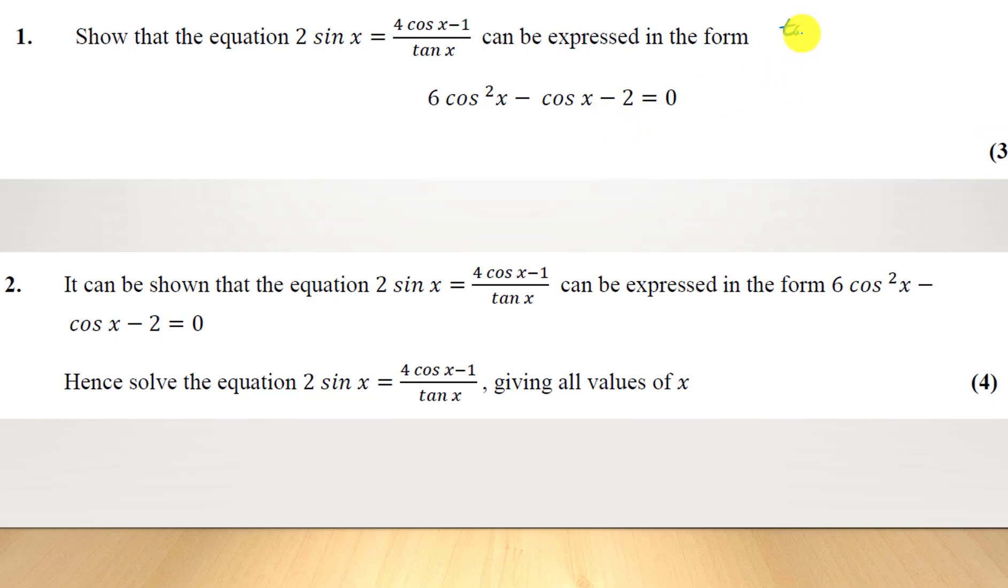We start with, we know tan(x) equals sin(x) over cos(x). So I'm going to times the tan out, so I don't have to deal with it as a fraction over a fraction. I'm going to show you this here, write it like this, equals 4cos(x) minus 1. Now we can see something happening. This is sin(x) over cos(x).